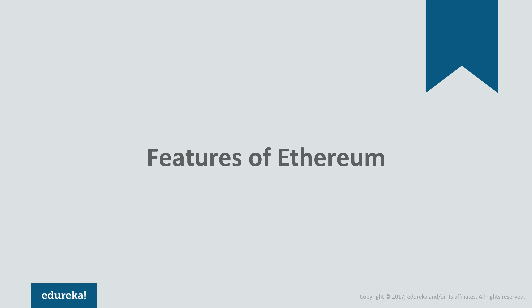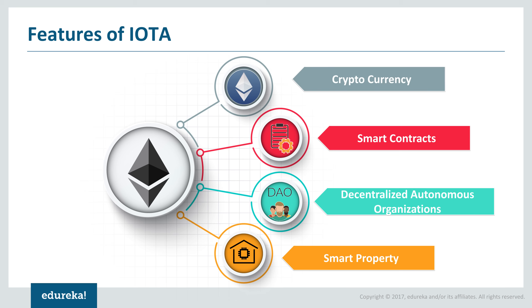Let's look at the key features which make Ethereum so popular and effective. There are four foundational pillars. Firstly, Ethereum is a blockchain-based implementation and thereby has its own internal cryptocurrency, which is Ether. Apart from that, it introduced the idea of smart contracts — an application that runs on blockchain. It also brought in the idea of a decentralized organization, and it introduced the concept of smart property, wherein you could digitally transfer property without the hassles of exchanging documents.